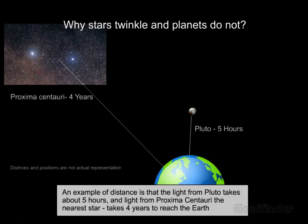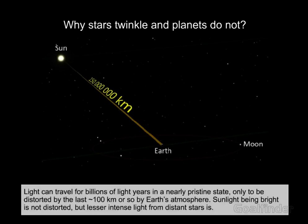For example, light from Pluto takes about 5 hours, and light from Proxima Centauri, the nearest star, takes 4 years to reach the Earth. Light can travel for billions of light years in a nearly pristine state, only to be distorted by the last approximate 100 km or so by Earth's atmosphere. Sunlight being bright is not distorted, but the lesser intense light from distant stars is.